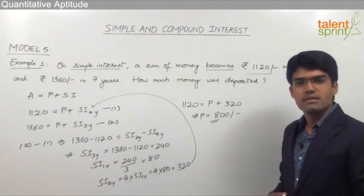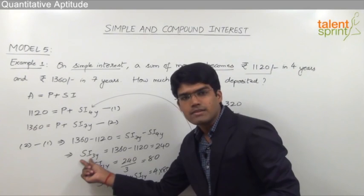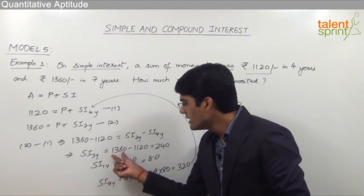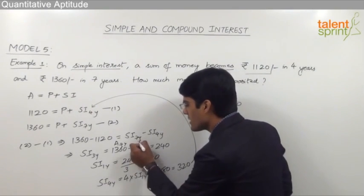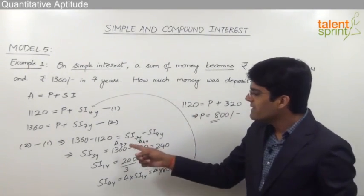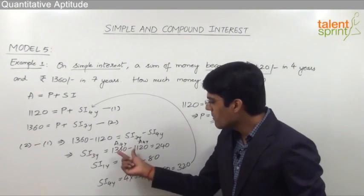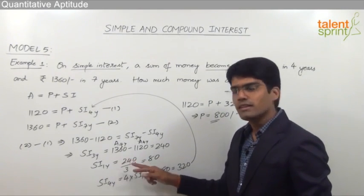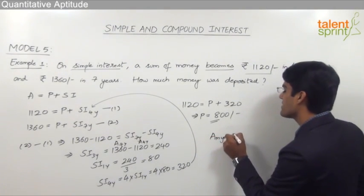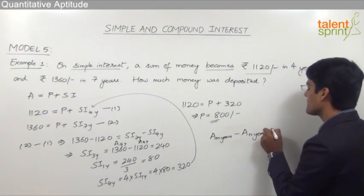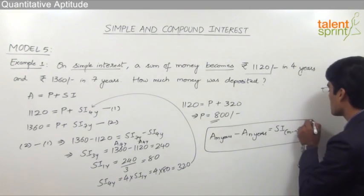This is the step-by-step procedure to find the principal. To reduce the number of steps, remember this key point: simple interest for 3 years equals 1360 minus 1120, where 1360 is the total amount in 7 years and 1120 is the total amount in 4 years. In general, total amount for m years minus total amount for n years equals simple interest for (m minus n) years. If you remember this, you can directly start from that step.